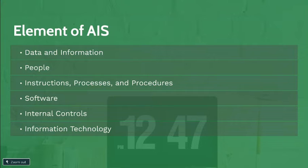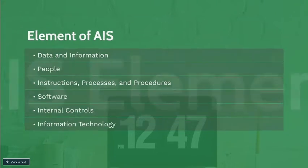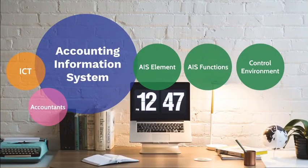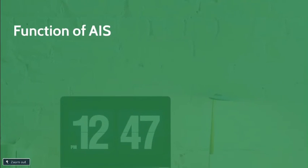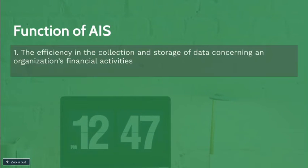So these are the elements of your AIS. The functions of accounting information system include the efficiency in the collection and storage of data concerning an organization's financial activities. This includes transactional data from source documents, recording of transactions in journals, and posting data from journals to ledgers.